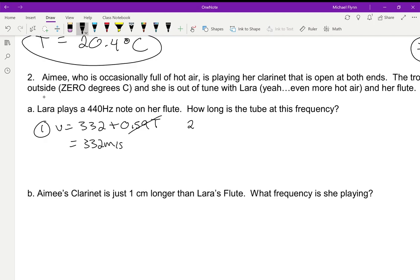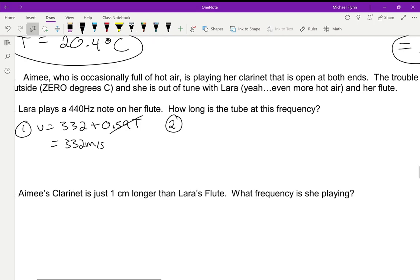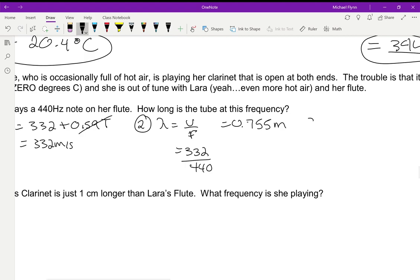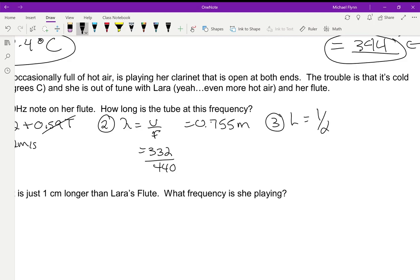Step two: once you have the speed of sound, we're going to find the wavelength. Wavelength equals v over f, so it's 332 divided by 440. I get 0.755. Now to get the length of the tube, L equals one half of the wavelength in the first harmonic mode.